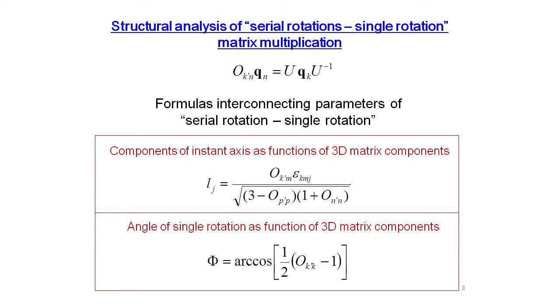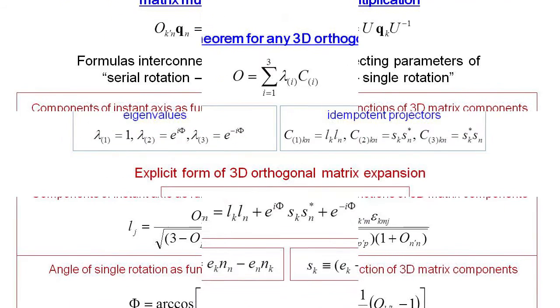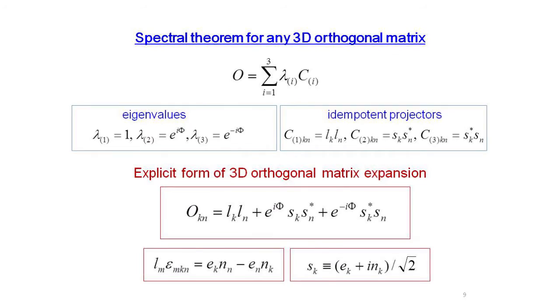We thoroughly investigate the structure of matrix multiplication of both approaches and deduce formulas interconnecting values of the assigned three angles of orthogonal serial rotation with values of the parameters of equivalent single rotation, namely components of the instant axis and respective rotational angle.